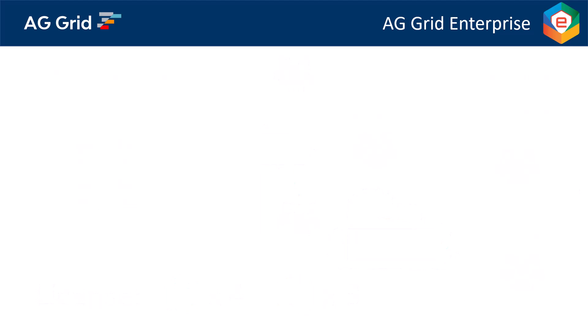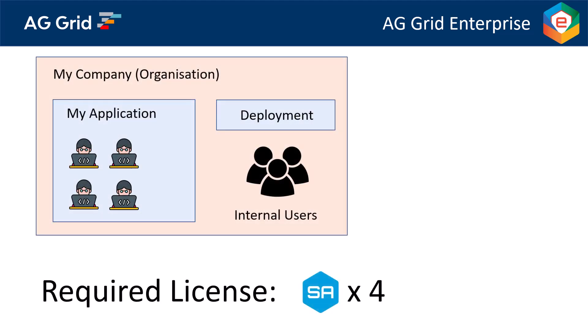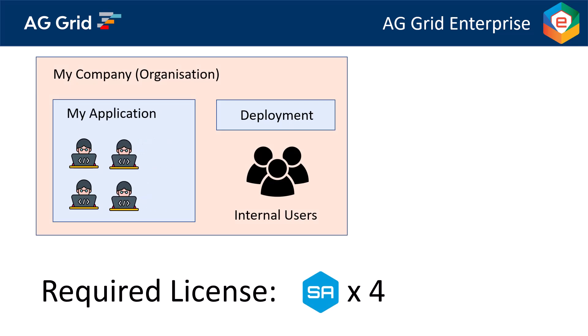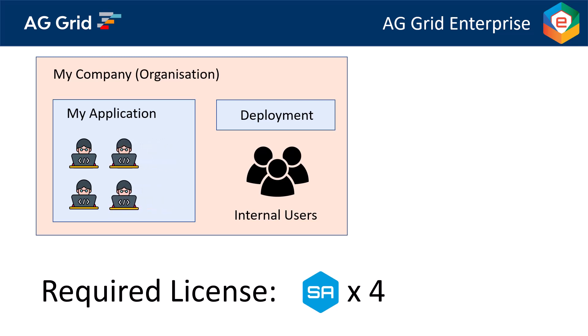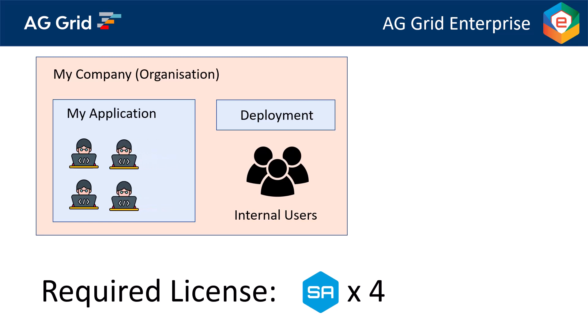Before moving on to licensing multiple applications, let's talk about developers moving on and off projects. When you license an application for a certain number of developers, it doesn't matter if developers are moving onto and off the project, as long as the total number of front-end developers on the project at any one time does not exceed the number of licensed developers. In this example, the application is licensed for four developers, so developers can come and go as long as the total count doesn't exceed four.